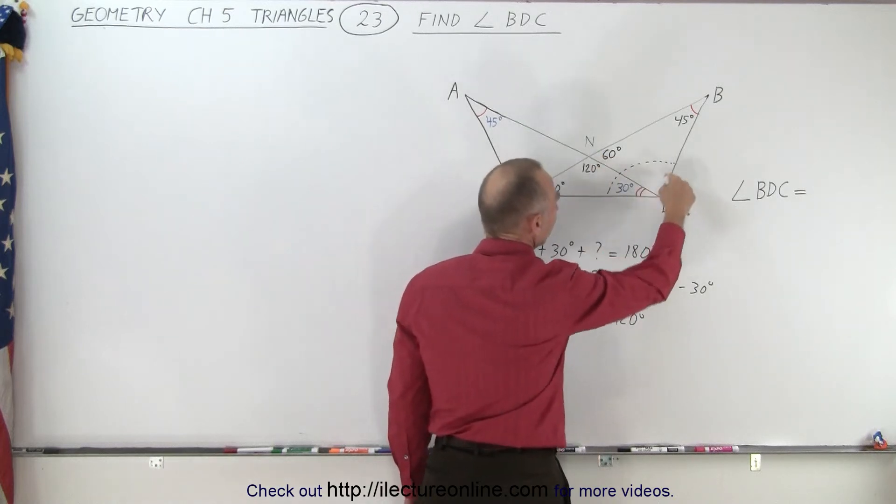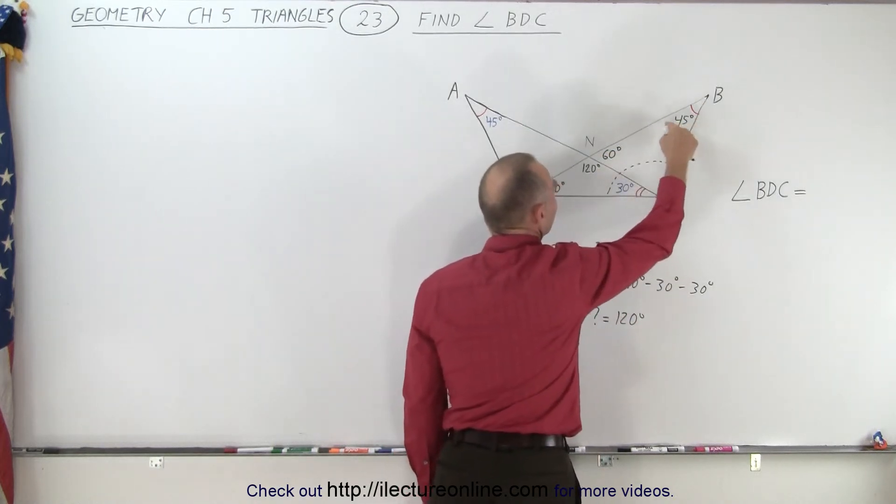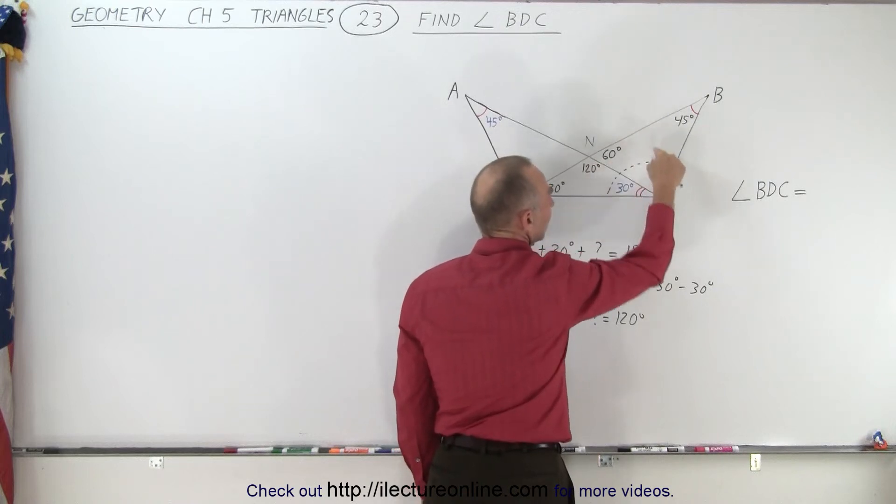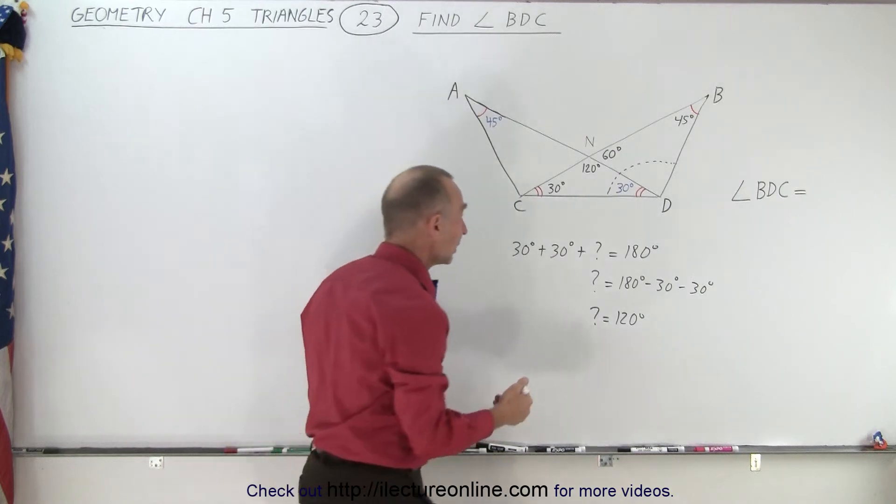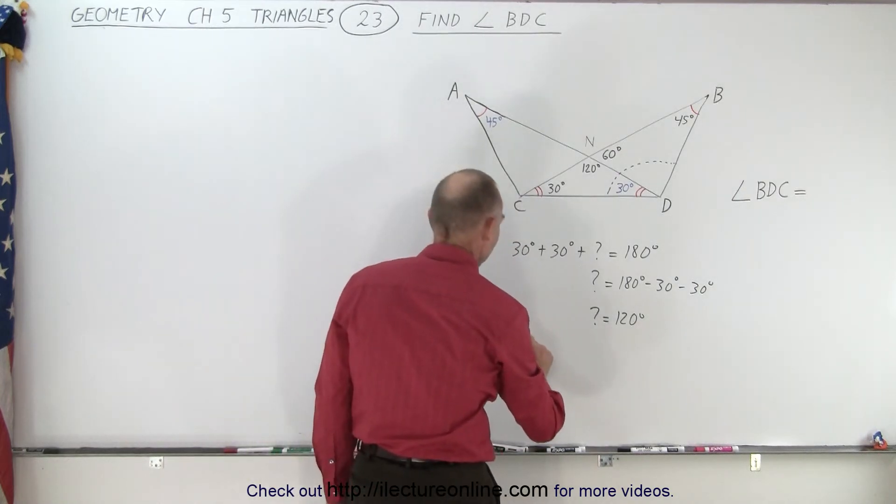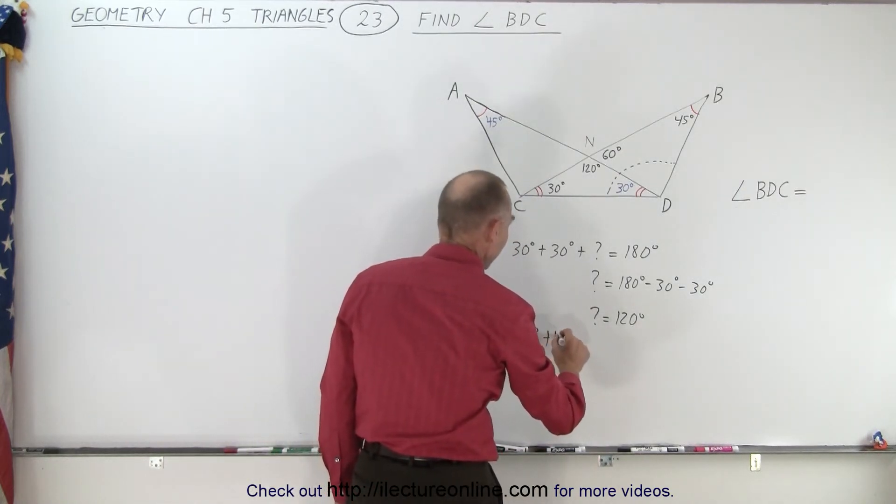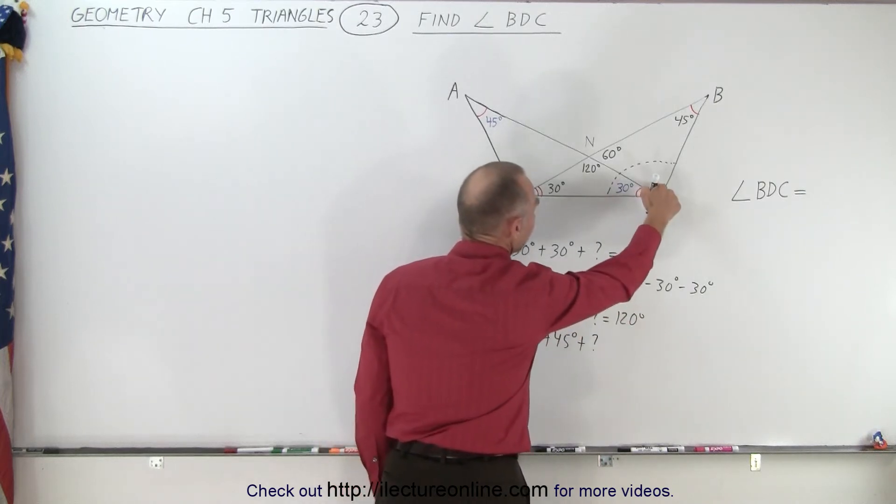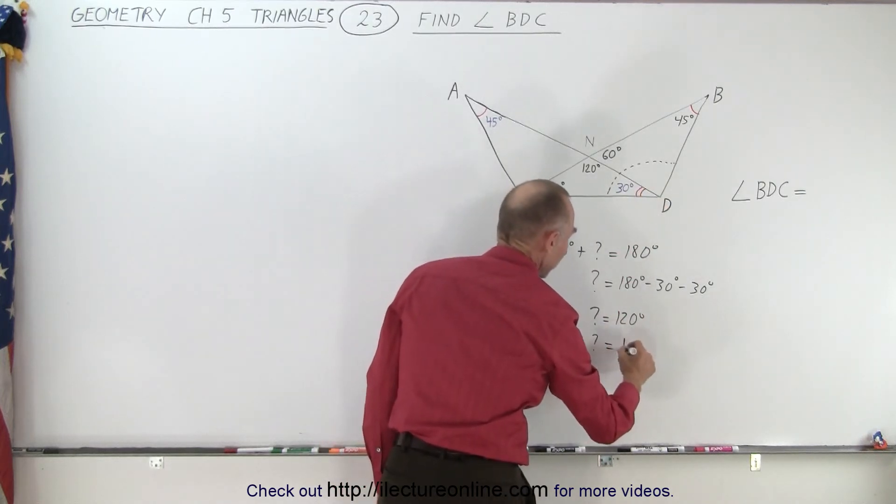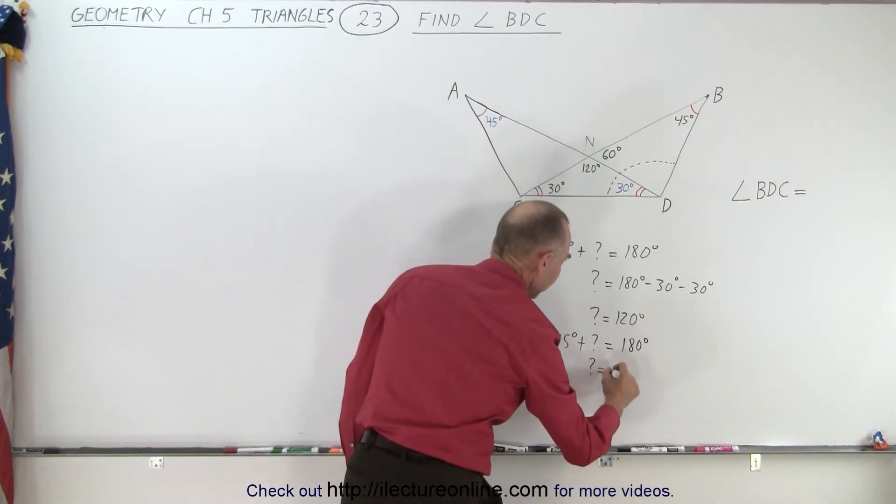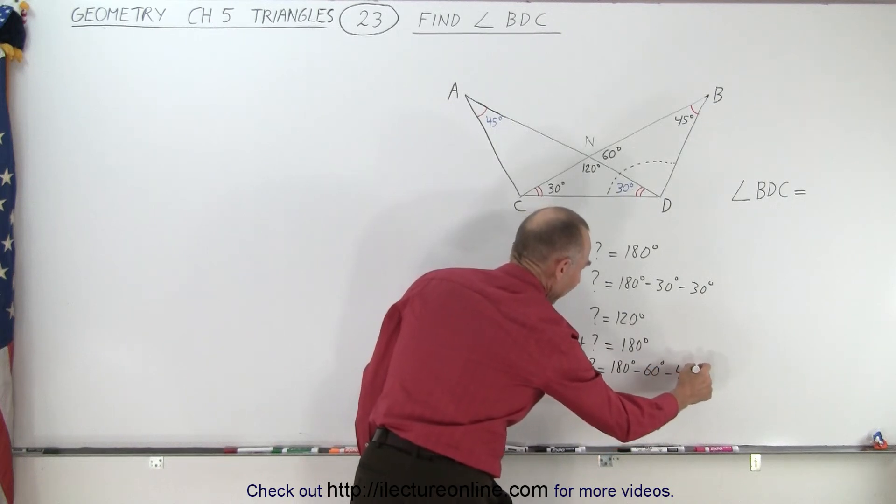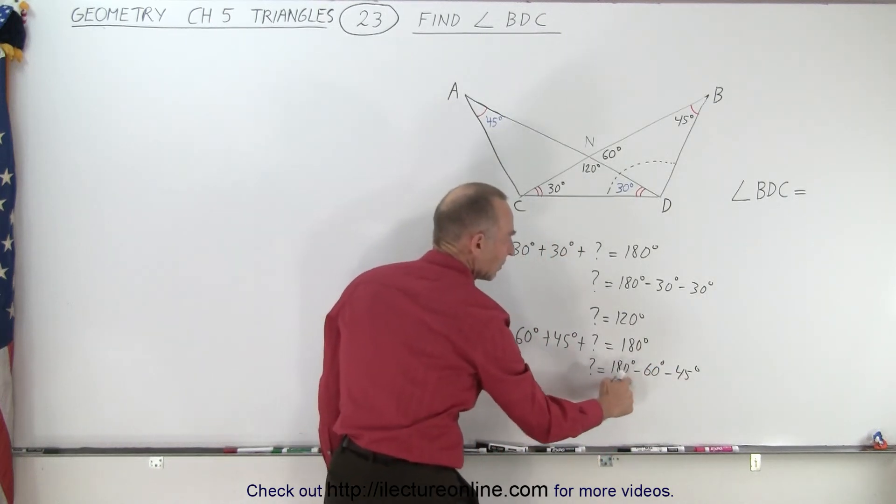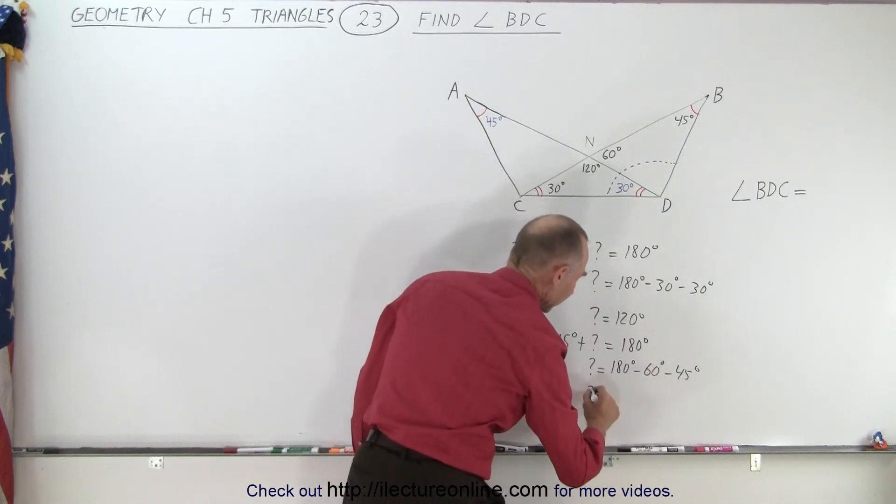Now we have this triangle right here. And this triangle has three angles. I know this one, I know this one, I can now find the third one. Of course we know that the three angles together must add up to 180 degrees. Which means that 60 degrees plus 45 degrees plus the unknown angle over here must add up to 180 degrees. So the unknown angle is equal to 180 degrees minus 60 degrees and minus 45 degrees. So 180 minus 60 is 120 minus 45. The unknown angle is 75 degrees.